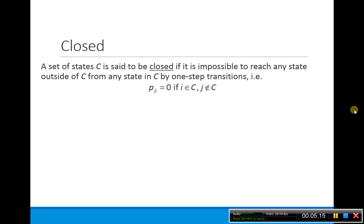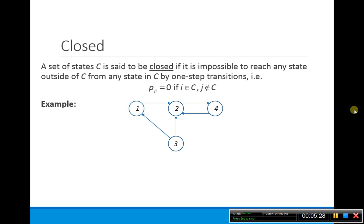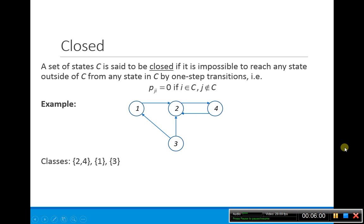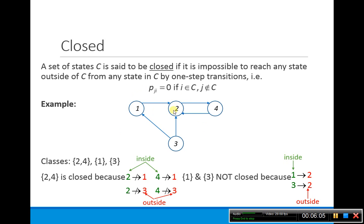Another term is 'closed'. A set of states C is said to be closed if, when you're in C, you can't reach any state outside of C by one-step transitions. In an example with four states — 1, 2, 3, 4 — state 1 goes to 2, 2 goes to 4, 4 goes to 2, and 3 can go to either 1 or 2. States 2 and 4 communicate and form a class. From 2 or 4, you cannot reach 1 or 3, so the set {2,4} is closed. State 1 alone can go to 2, exiting its set, so it is not closed. State 3 can go to 1 or 2, so it is also not closed.